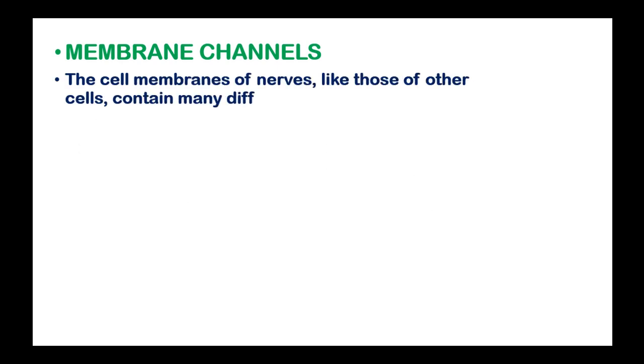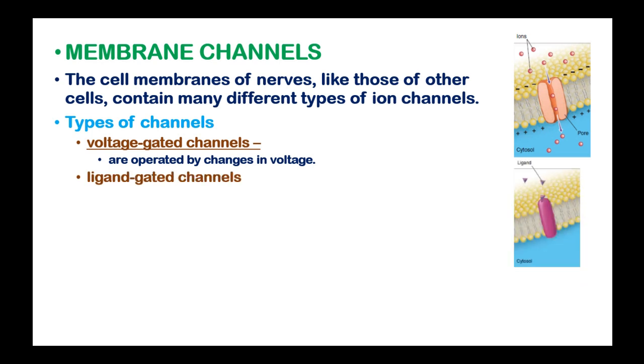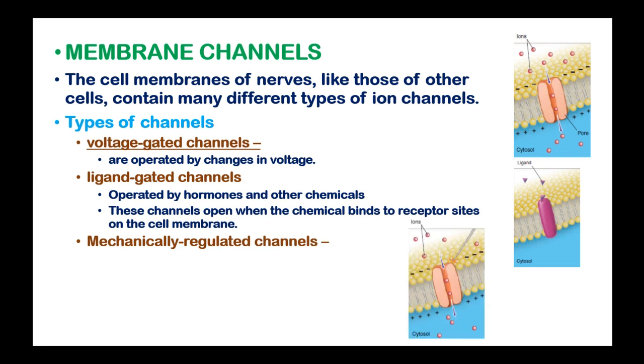What are membrane channels? The cell membrane of the nerves, like those of other cells, contain many different types of ion channels: the voltage-gated channels, which are operated by changes in voltage; the ligand-gated channels, which are operated by hormones and other chemicals and open when the chemical binds to its receptor sites on the cell membrane; and lastly, mechanically regulated channels, which are regulated mechanically.